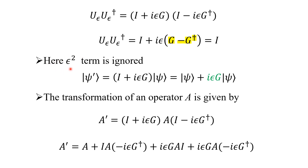The epsilon-squared term is ignored since epsilon is very small. Now, the transformed state is |ψ'⟩ = U|ψ⟩ = (I + iεG)|ψ⟩ = |ψ⟩ + iεG|ψ⟩. We will see the application of this for translational and rotational symmetry.